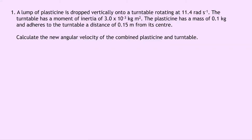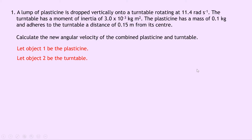Let's get started. Question one says that a lump of plasticine is dropped vertically onto a turntable rotating at 11.4 radians per second. The turntable has a moment of inertia of 3.0 times 10 to the minus 3 kilogram meters squared. The plasticine has a mass of 0.1 kilograms and adheres to the turntable a distance of 0.15 meters from its center. Calculate the new angular velocity of the combined plasticine and turntable. We're going to need to use conservation of angular momentum. Let object one be the plasticine and let object two be the turntable.